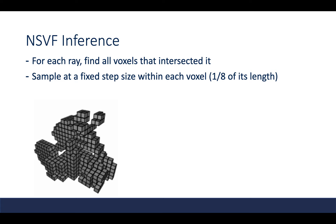As a summary for inference: we'll very quickly find the intersections for each ray, we'll sample within each of the intersected voxels, and we'll accumulate the color along each ray in the same way as NERF to form the final color at that image location. I'll talk in more detail about how this is done now.